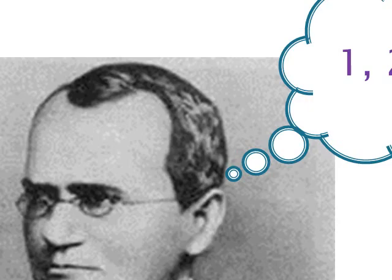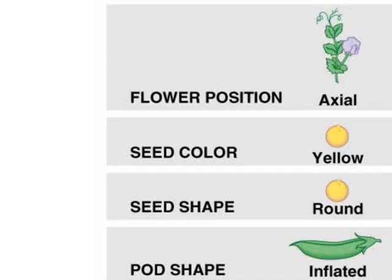So he came up with a couple of different principles. The first principle is dominance, which meant that some unit characters can mask the expression of others. For example, purple is a dominant trait for flower color — all of the dominant traits are in the left-hand column. So if you had a purple and a white and you bred them together, you'd see purples mostly.